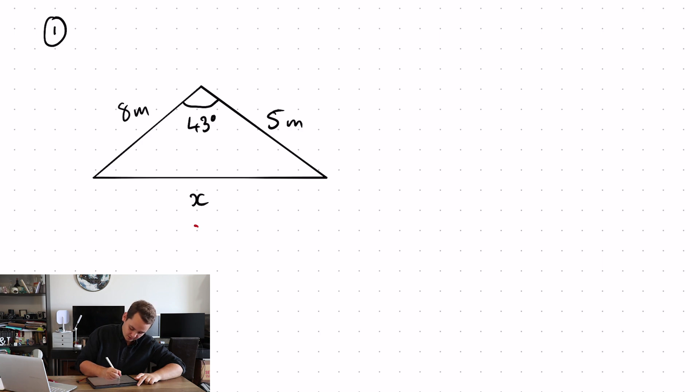So the unknown side, locate C, angle opposite capital C, either side A or B, doesn't matter which way around you do it, but I'm going to call this A and that side B.